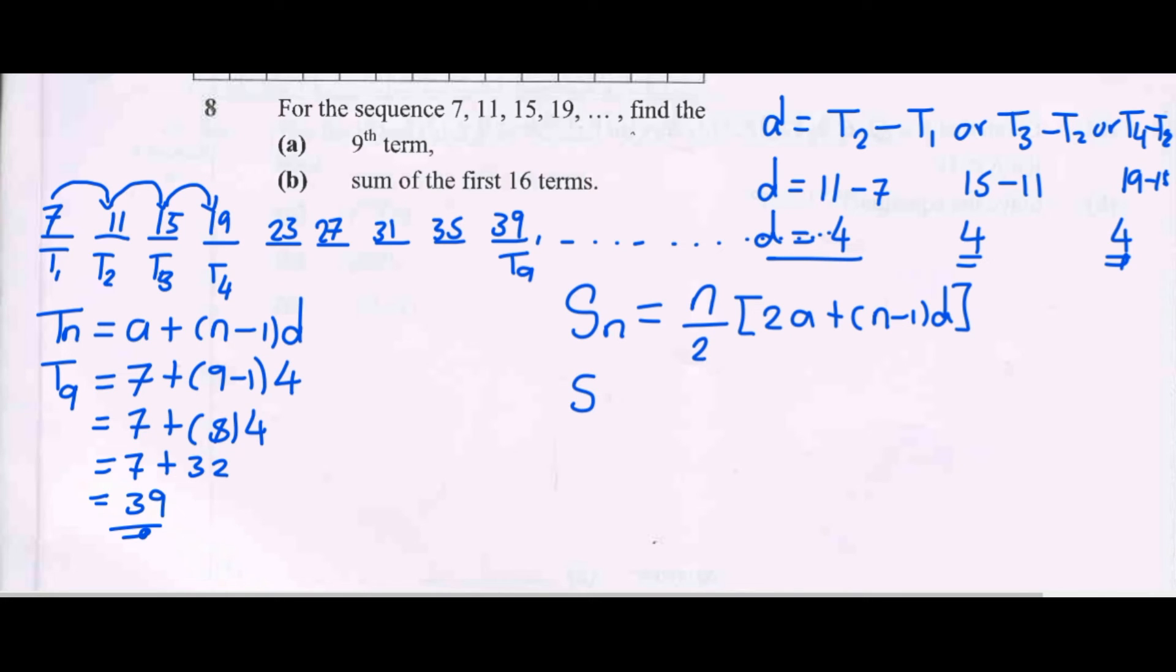So S₁₆ = 16/2, then we have 2 times a which is 7, plus 16 minus 1 times d which is 4. We can divide 16 by 2 to give us 8. 2 times 7 is 14, plus 15 times 4.